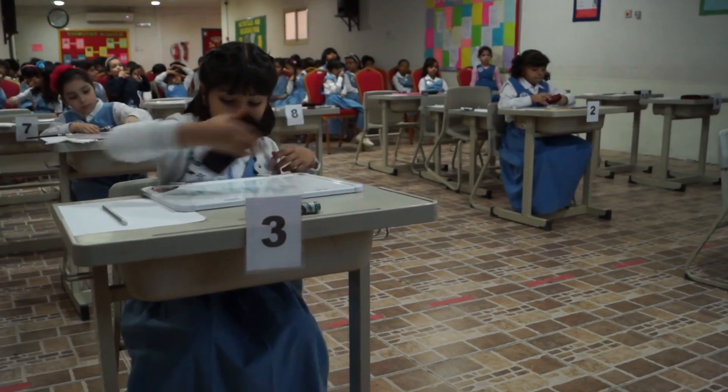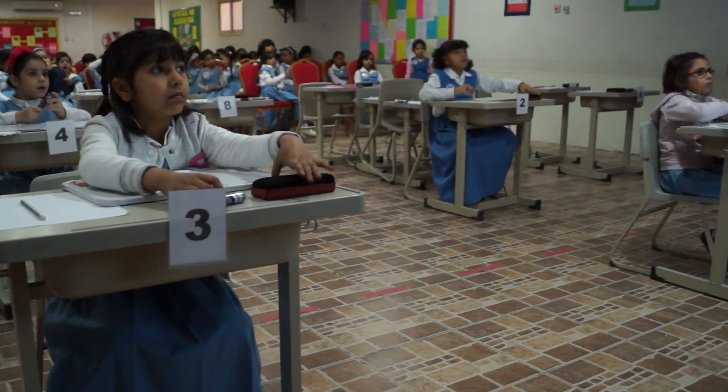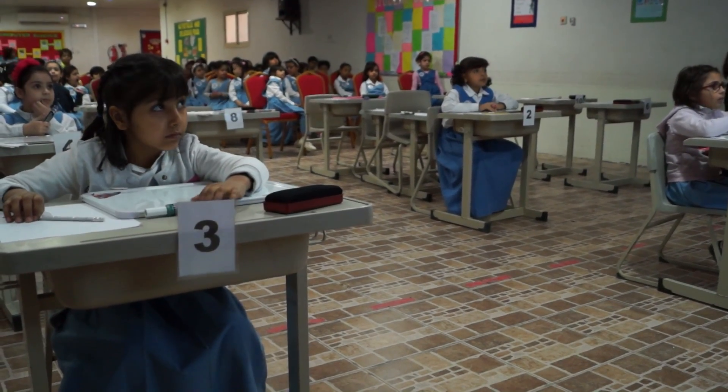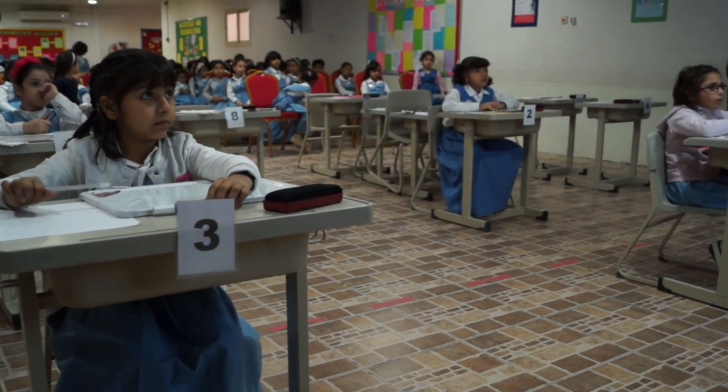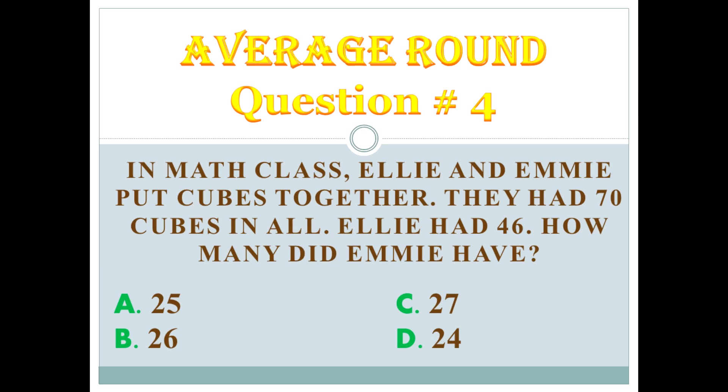Question number 4. In the math class, Ellie and Emmy put cubes together. They had 70 cubes in all. Ellie had 46. How many did Emmy have? Again: in math class, Ellie and Emmy put cubes together. They had 70 cubes in all. Ellie had 46. How many did Emmy have? A: 25. B: 26. C: 27. D: 24.